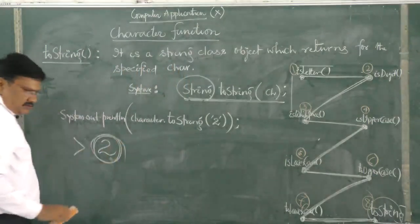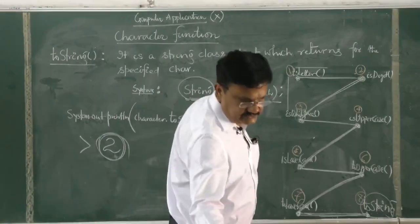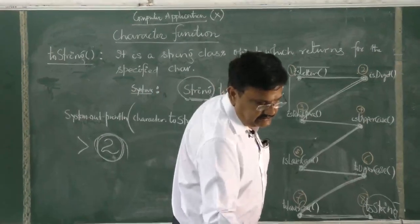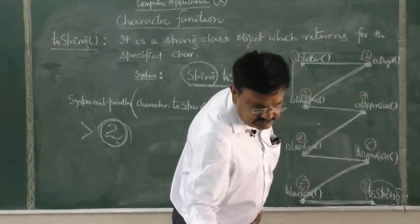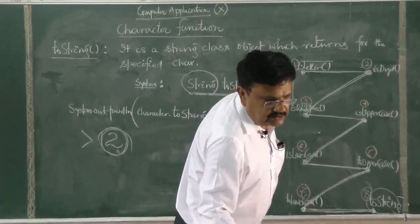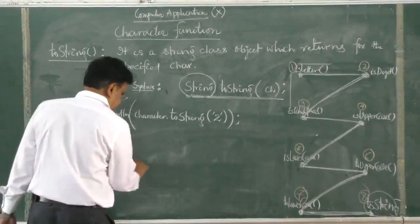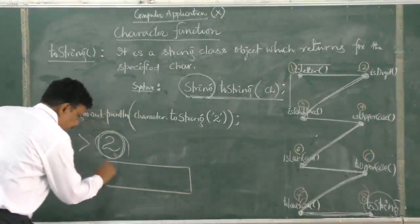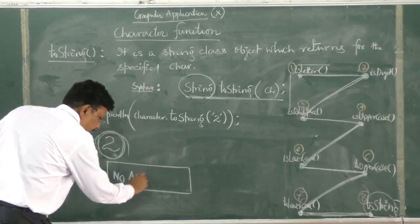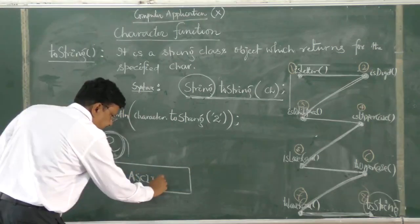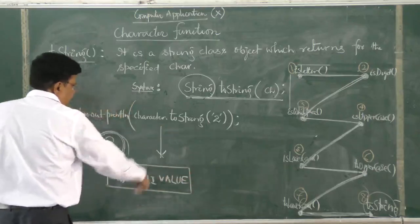Now, one thing you cannot do is use an ASCII value in this particular type — no ASCII value to be used in toString.